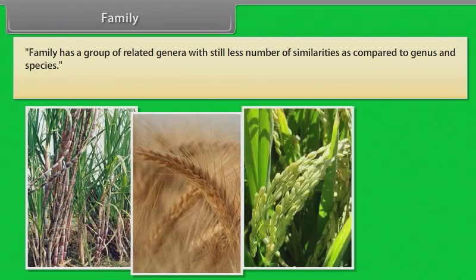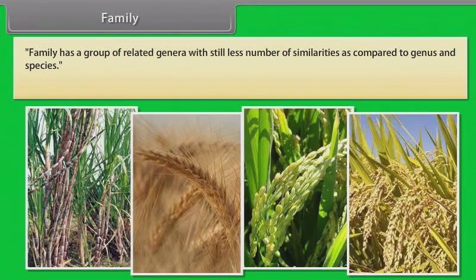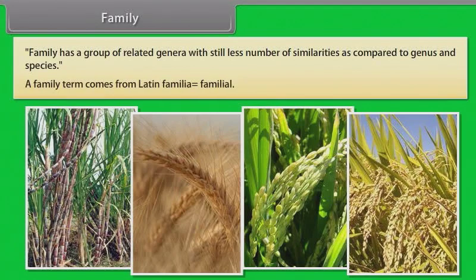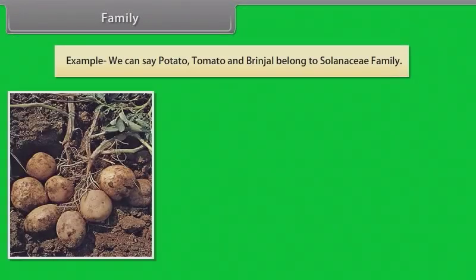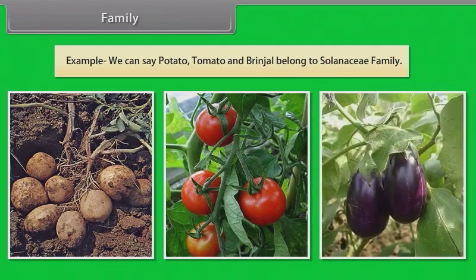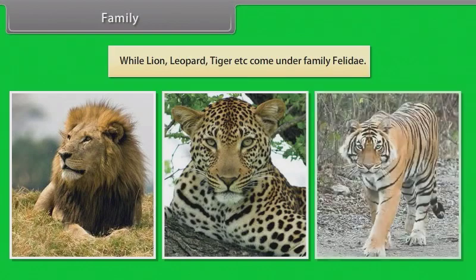Family has a group of related genera with still fewer similarities as compared to genus and species. The term family comes from Latin familia, meaning familial. For example, potato, tomato and brinjal belong to the Solanaceae family, while lion, leopard, tiger, etc. come under family Felidae.